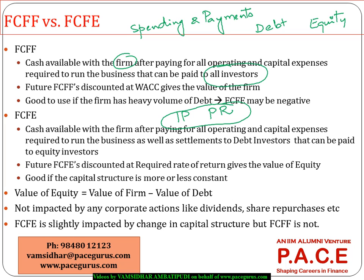Free cash flow to equity is the amount of cash available with the firm to be distributed to equity investors, because equity investors get only the residual — whatever is left after distributing to the lenders. So when I say free cash flow to the equity, it is that amount of cash after the company has really spent everything for the business in that year and also made the necessary payments towards interest and principal. Whatever cash is really left is what we call free cash flow to the equity.